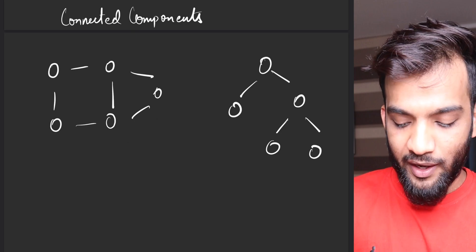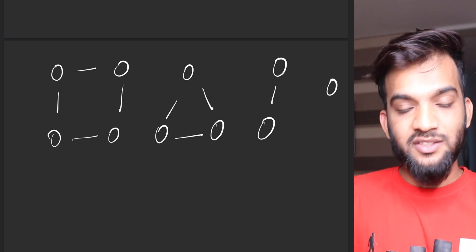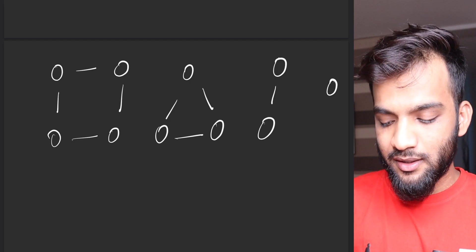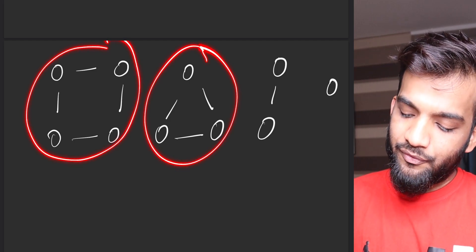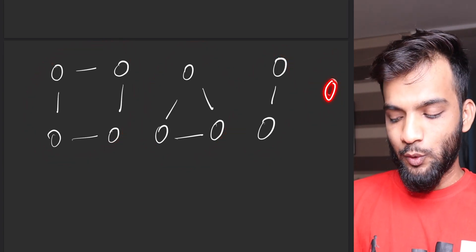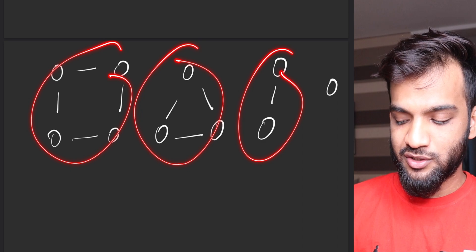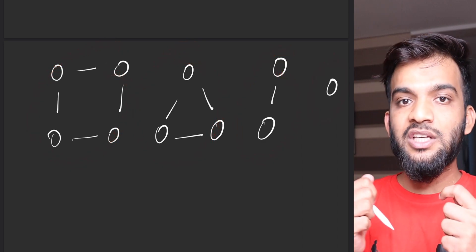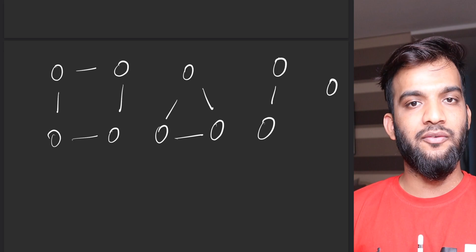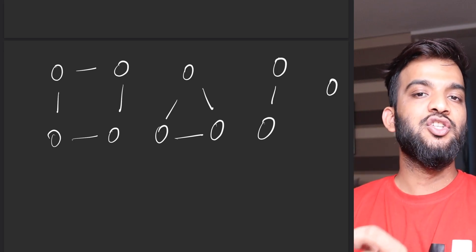But what if I ask you: is this a graph? If I show you something like this, you might say yes, this is a graph, this is a graph, this is a graph, this is a graph — there are four graphs. This is a single node, this can also be treated as a single node. You're correct, these are four graphs. But can these four graphs be one single graph? You might say no, they're not connected.